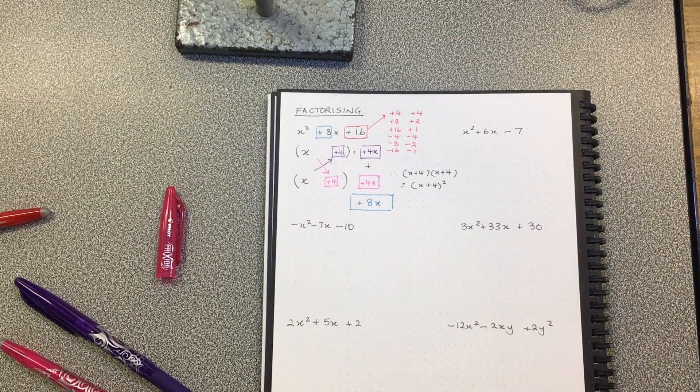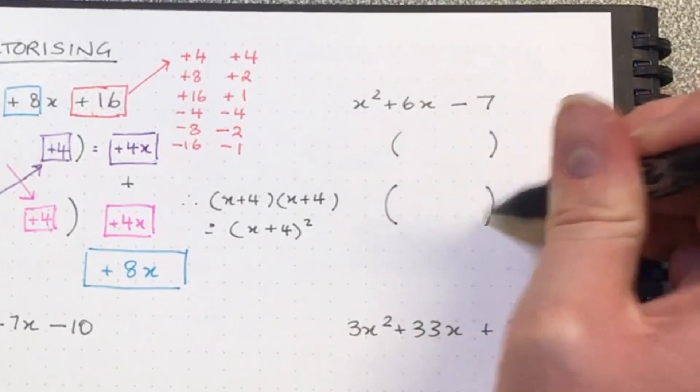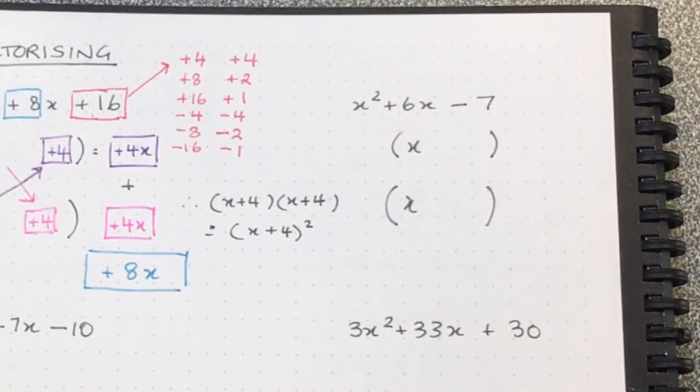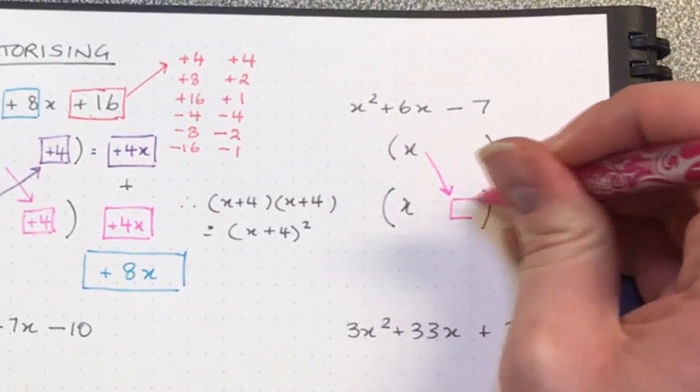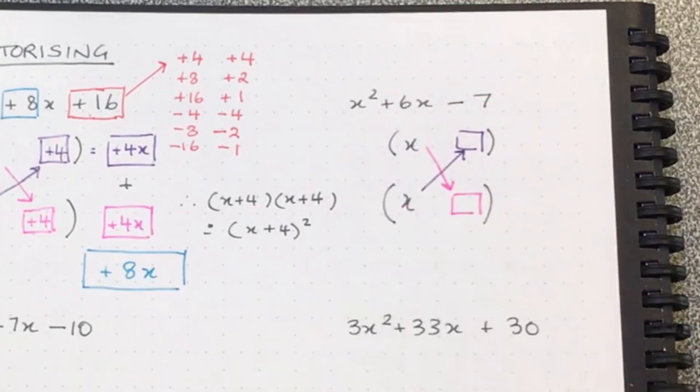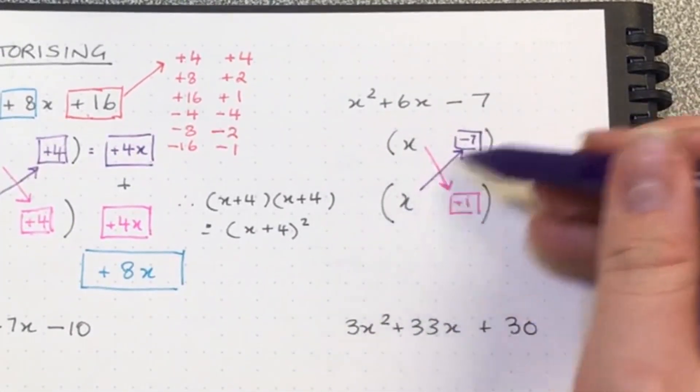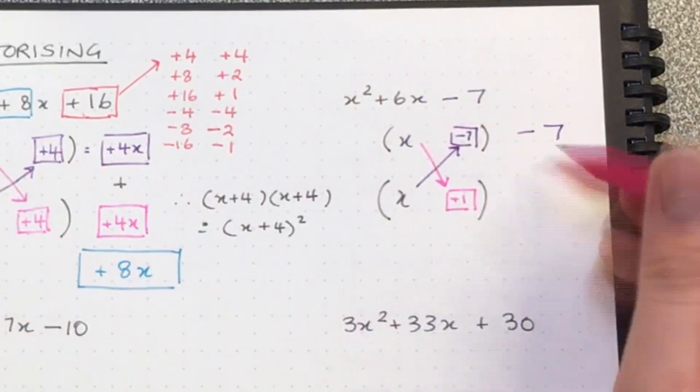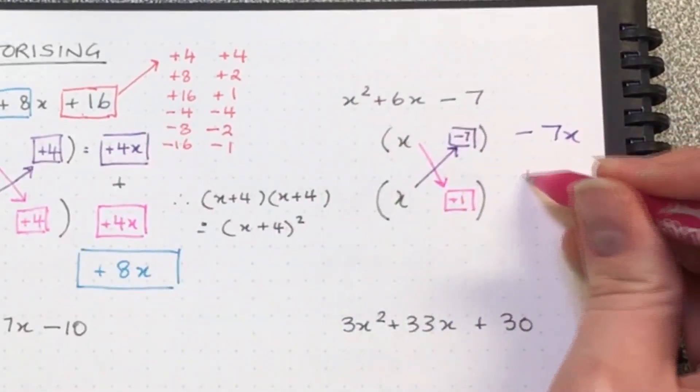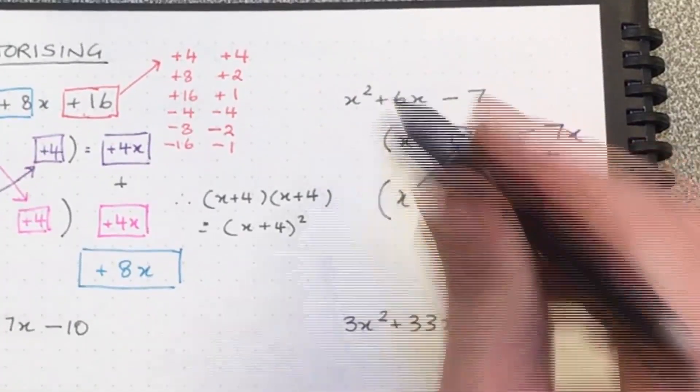Now I'm going to do the next one without writing the factors - we're going to try and do it in our heads. X times x is going to get us x squared, but I need two numbers that multiply together to get negative seven, add together to get positive six. Negative seven and positive one - let's try that. X times negative seven is negative seven x, x times positive one is positive one x. If I add those two friends together, negative seven plus one gets us negative six x, not positive six x.